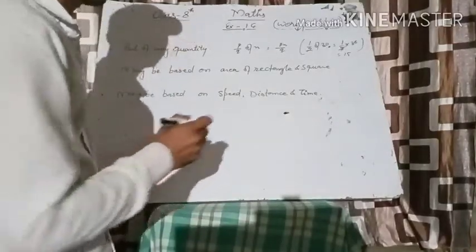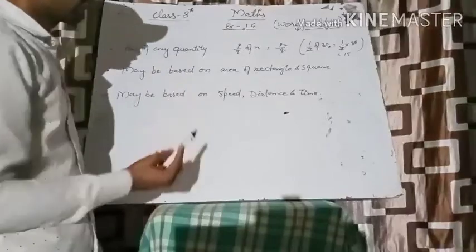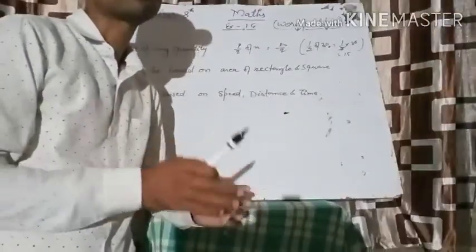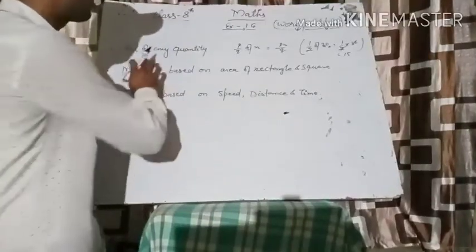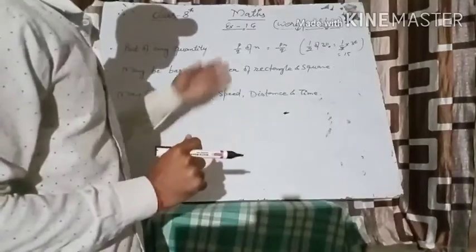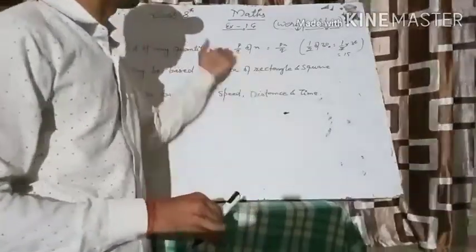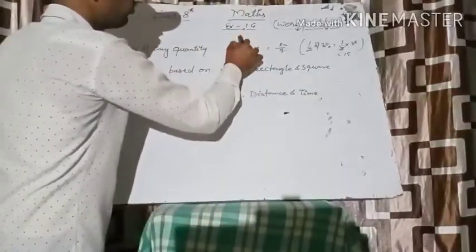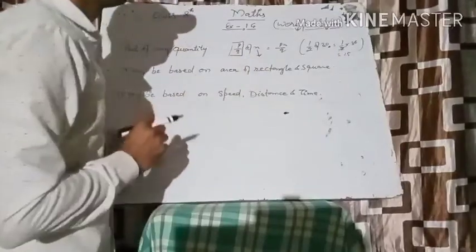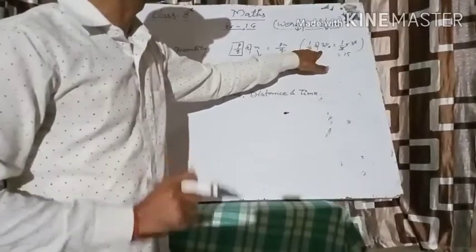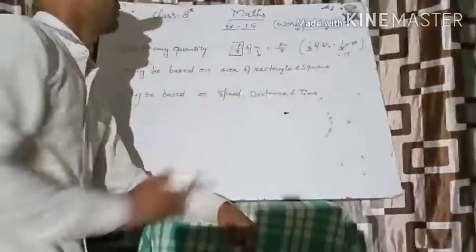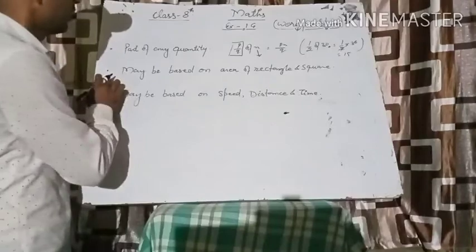Whenever you read the questions, there are some common tricks. You will notice that the part of a quantity may be given as p upon q of x — meaning p upon q part of what? For example, 1 upon 2 of 30 means 1 upon 2 is the part of 30. In place of 'of' we use multiplication, so it becomes 15.